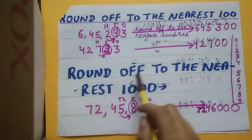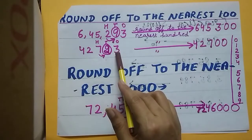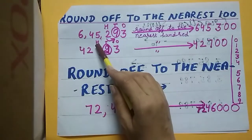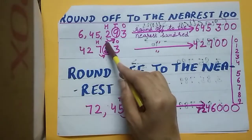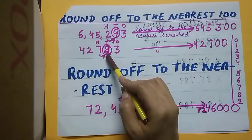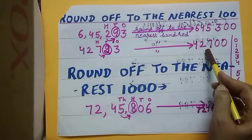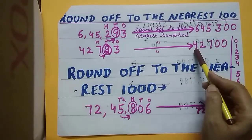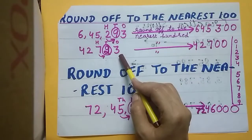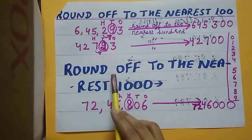Let's understand with one more example: 42723, round off to the nearest hundred. Write down ones, tens, hundred. Just right of the hundreds place, put circle on the digit — the number is two, which is less than five. So it will become zero and there will be no change on the hundreds place. The answer will become 42700.